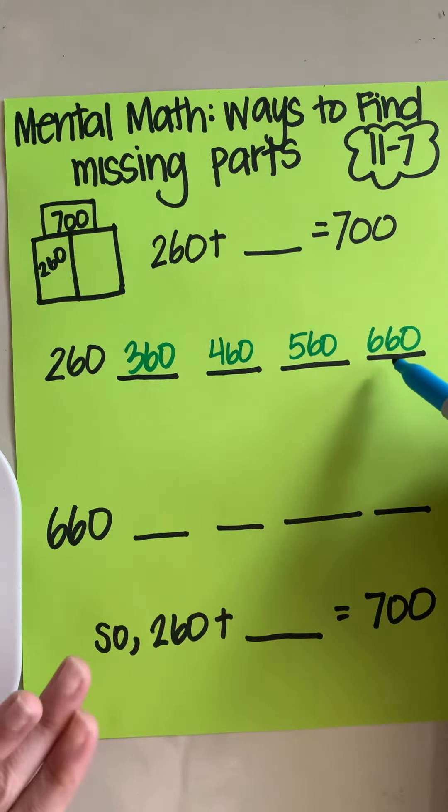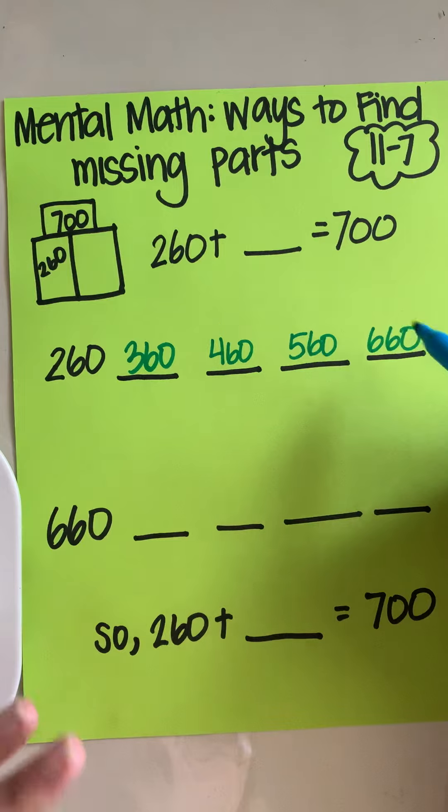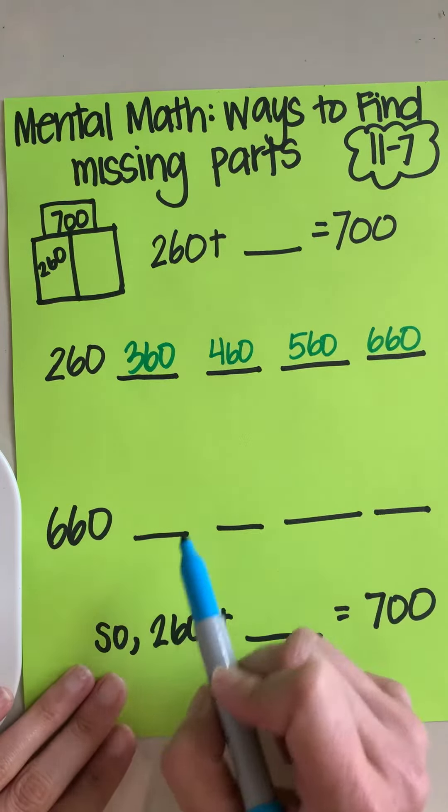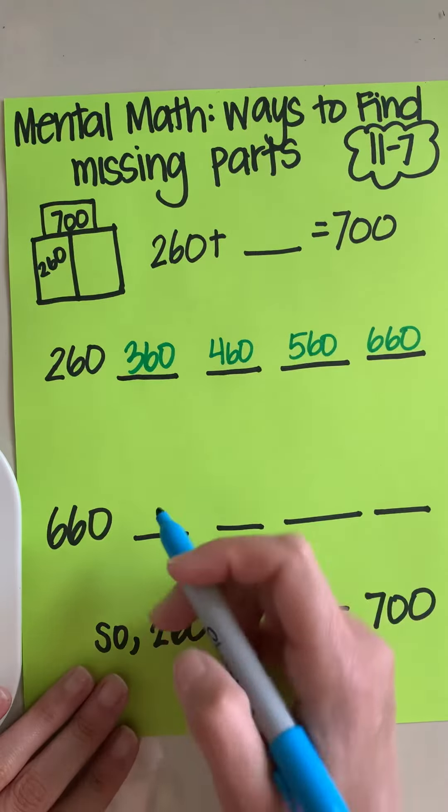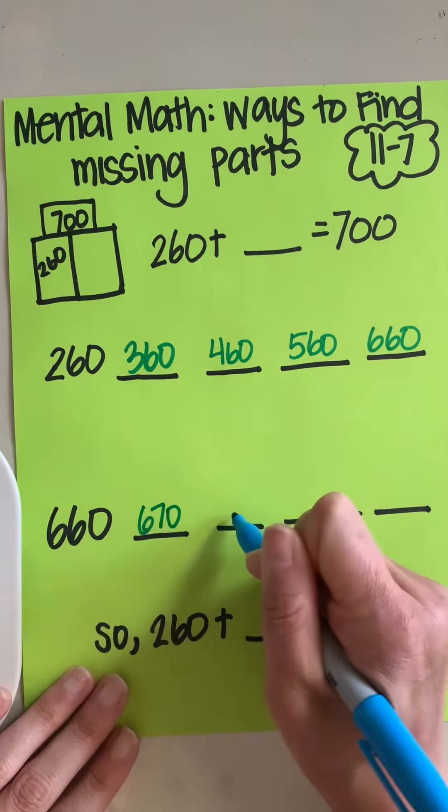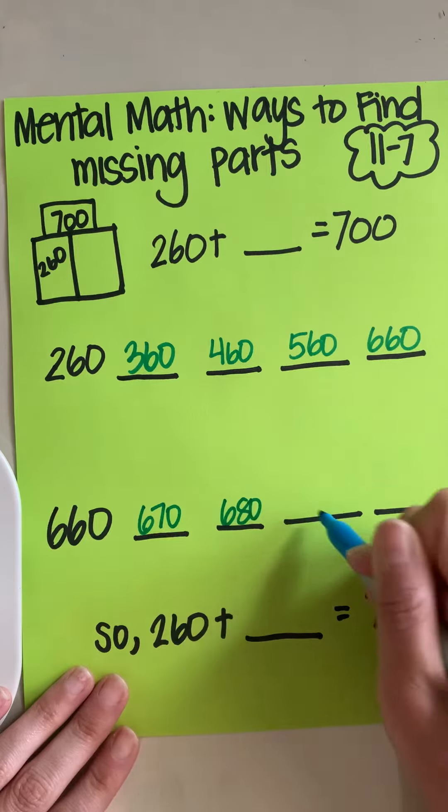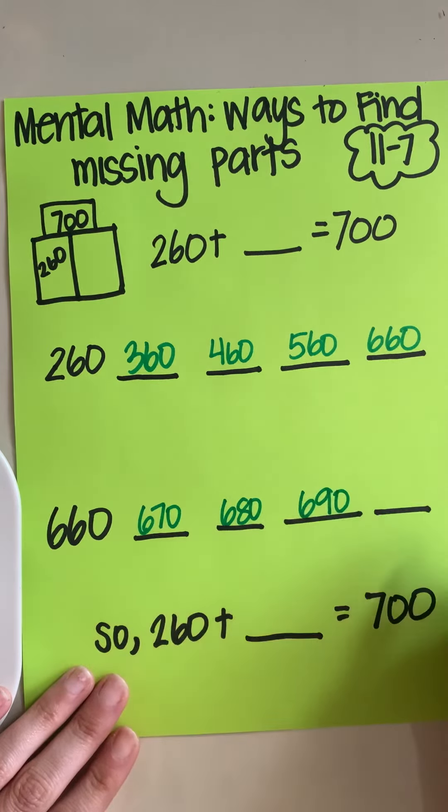So when I get to my biggest jumps after 100, I'm going to drop it down here. Now I'm going to jump by 10. So 660, I'm going to stop again at 700, 670, 680, 690, 700.